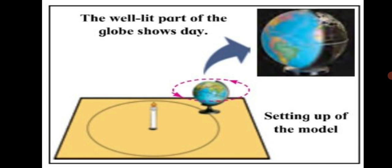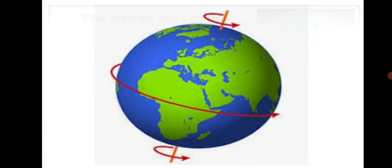This is exactly how the Earth rotates — from west to east. As the Earth rotates, its different parts come into the light of the sun one after the other and turn away from it in the same order. This gives rise to day and night, sunset and sunrise.